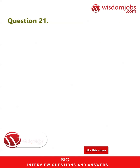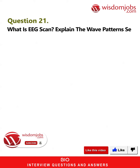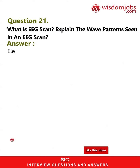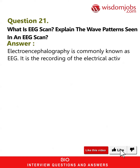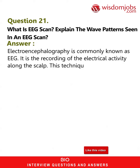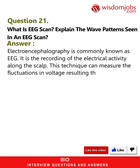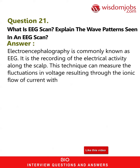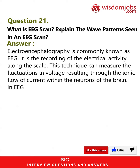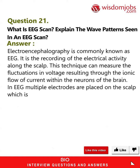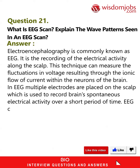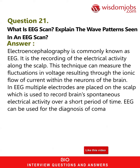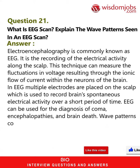Question 21: What is an EEG scan? Explain the wave patterns seen in an EEG scan. Electroencephalography, commonly known as EEG, is the recording of electrical activity along the scalp. This technique measures fluctuations in voltage resulting from ionic current flow within the neurons of the brain. Multiple electrodes are placed on the scalp to record the brain's spontaneous electrical activity over a short period. EEG can be used for diagnosis of coma, encephalopathies, and brain death.